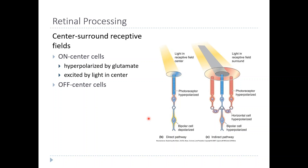An off-center cell will have the opposite response. An off-center cell is a different type of bipolar cell that responds to light in the center by actually becoming hyperpolarized. That means they are depolarized by glutamate. So if this were an off-center cell and light hit the center, that would reduce the amount of glutamate, which would hyperpolarize the cell.